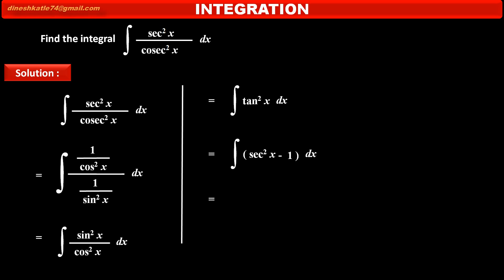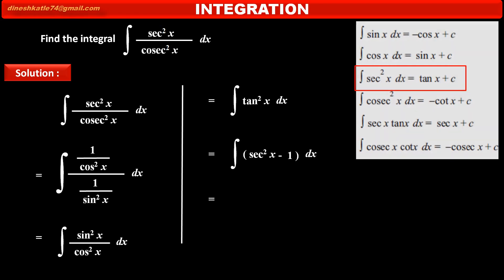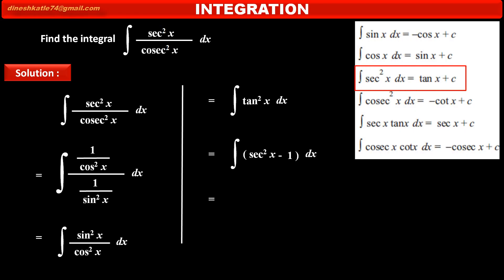First we have to find integration of first term that is sec square x which we can find by using formula integration of sec square x is equal to tan x, so integration of first term sec square x is tan x minus